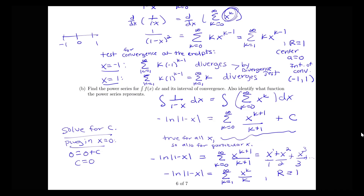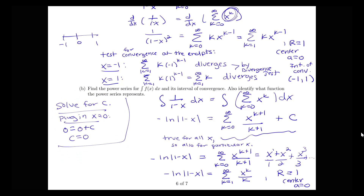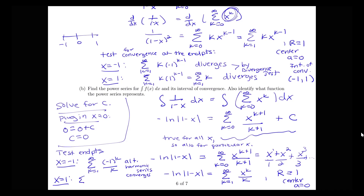So negative log(1 minus x) equals the sum from k equals 1 to infinity of x to the k over k. The radius of convergence did not change when I took the integral, still centered at a equals 0 with radius 1. Testing the endpoints: at x equals negative 1, we have the sum from k equals 1 to infinity of (negative 1) to the k over k, which is the alternating harmonic series — that converges. At x equals 1, we have the sum of 1 over k, which is the harmonic series — that diverges.